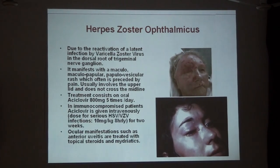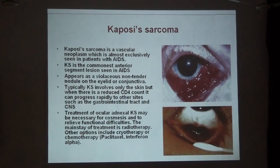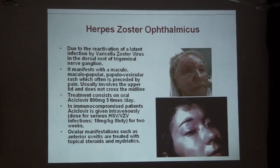Treatment is usually with oral acyclovir at a dose of around 800 mg, five times daily for two weeks. But in severely immunocompromised patients, you can go for intravenous acyclovir at 10 mg per kg, 8-hourly, for two weeks. Other ophthalmic manifestations like uveitis may be treated with topical steroids and mydriatics.